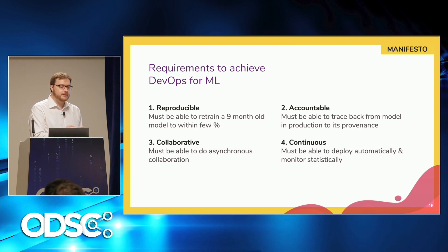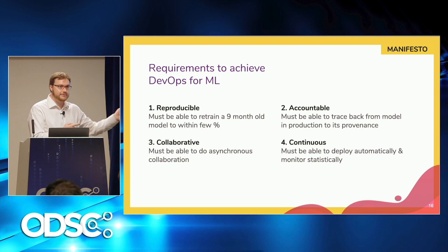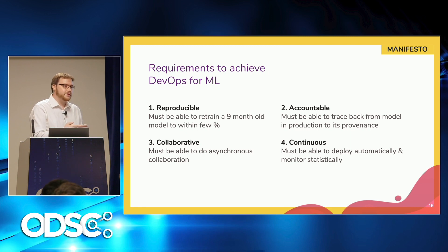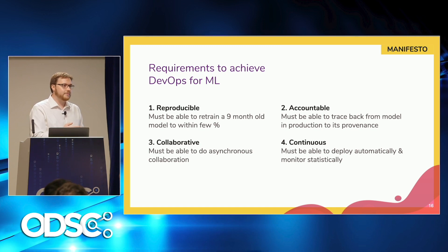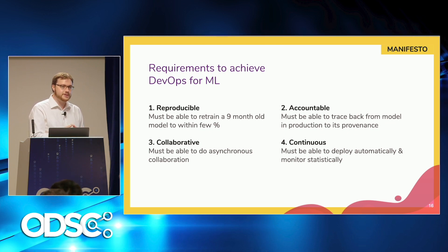The first requirement is reproducibility. A test for this is: can I retrain a model that my colleague — who has now left the company — trained nine months ago and get the same statistics to within at least a few percent? I'm not saying it has to be exactly the same accuracy score, because some models, especially deep learning models, train slightly differently each time due to a little bit of randomness. But you should at least be able to get almost the same result nine months later.